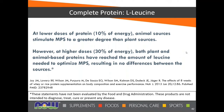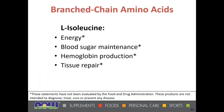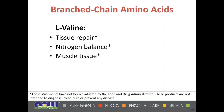At lower doses of protein — like 10% of total energy needs — animal sources stimulate muscle protein synthesis to a greater degree than plant sources. But at higher doses, like 30% of energy, both plant and animal-based proteins have reached the amount of leucine needed to optimize muscle protein synthesis, resulting in no differences between the sources. This supports the argument in favor of plant proteins like pea protein. L-isoleucine is involved in energy, blood sugar maintenance, hemoglobin production, and tissue repair. L-valine supports tissue repair, nitrogen balance, and muscle tissue.